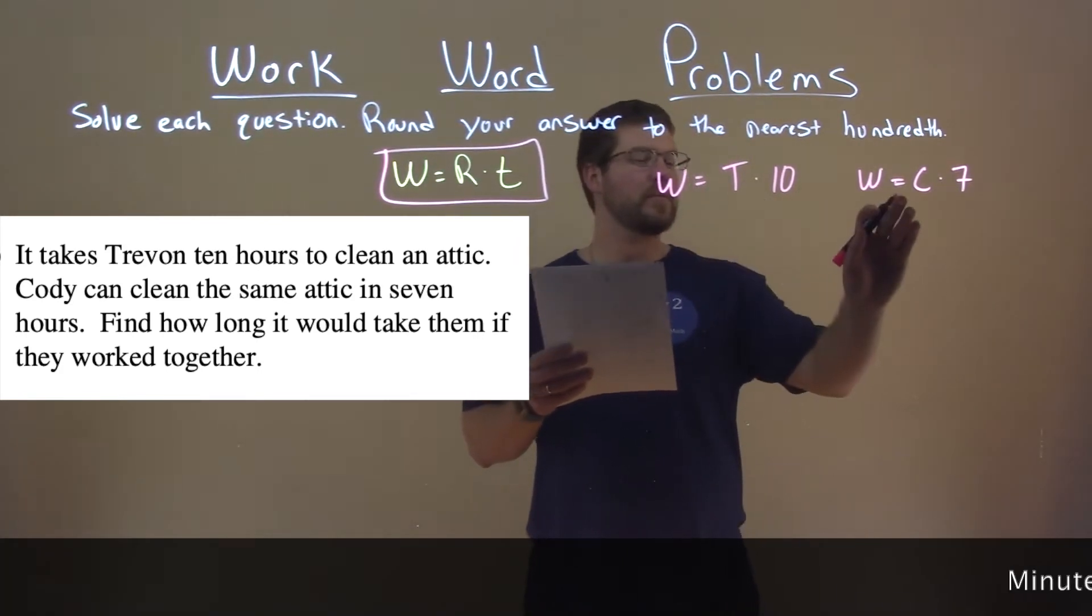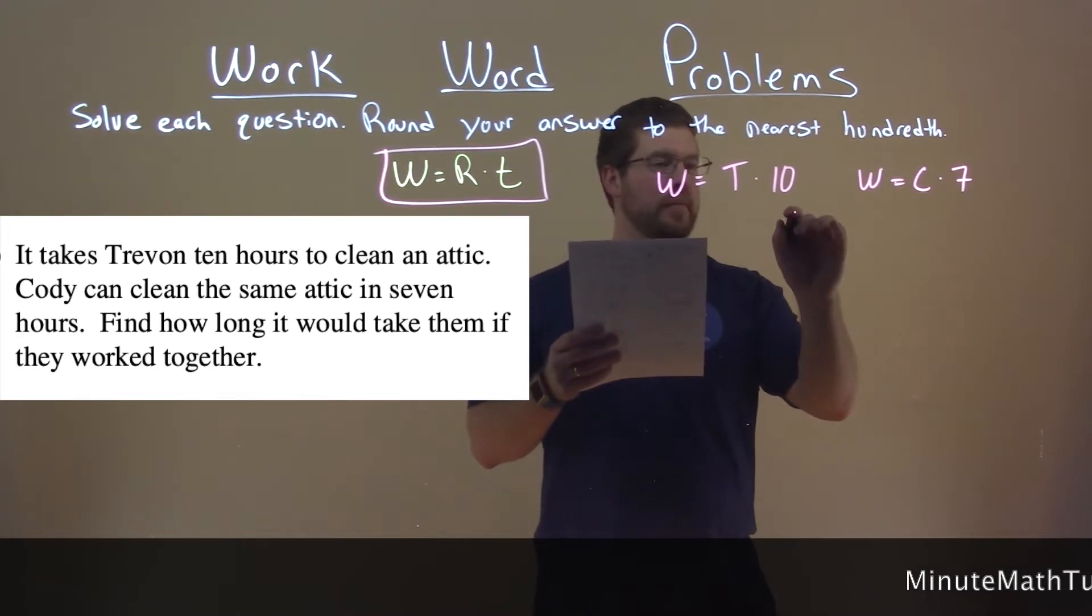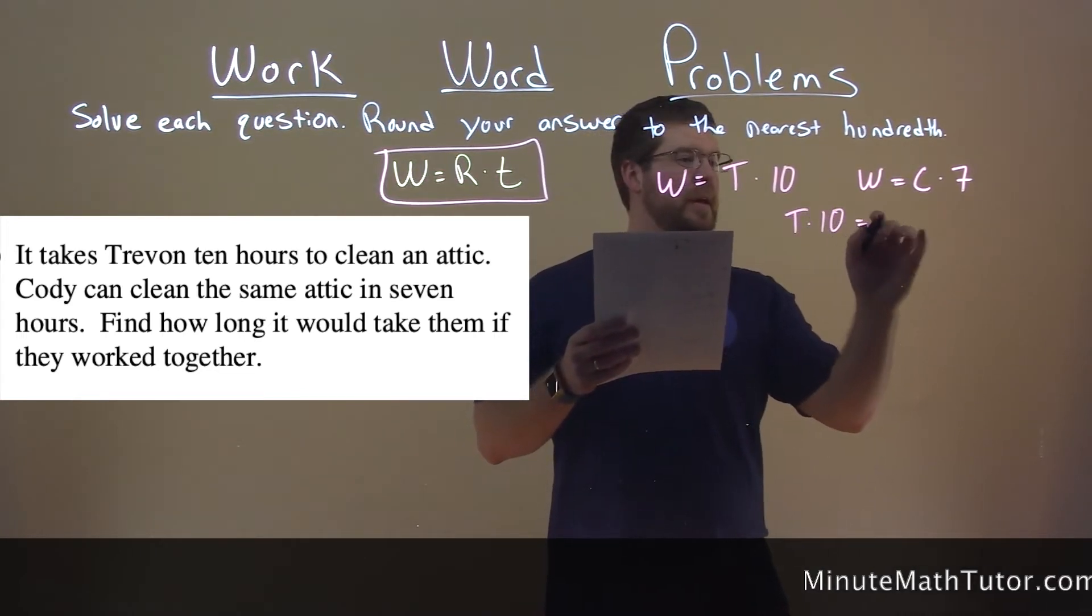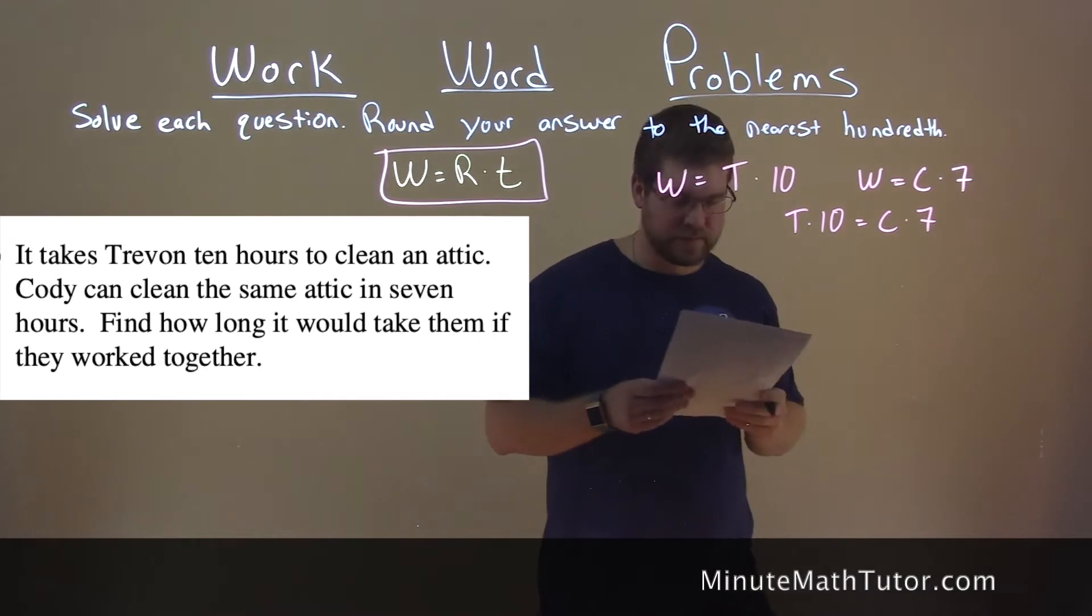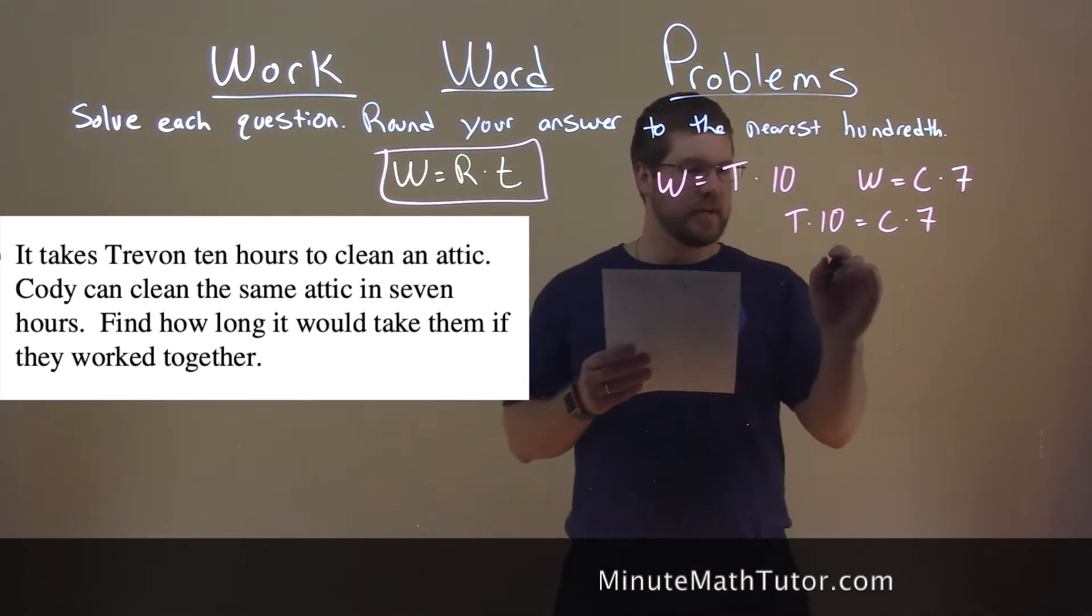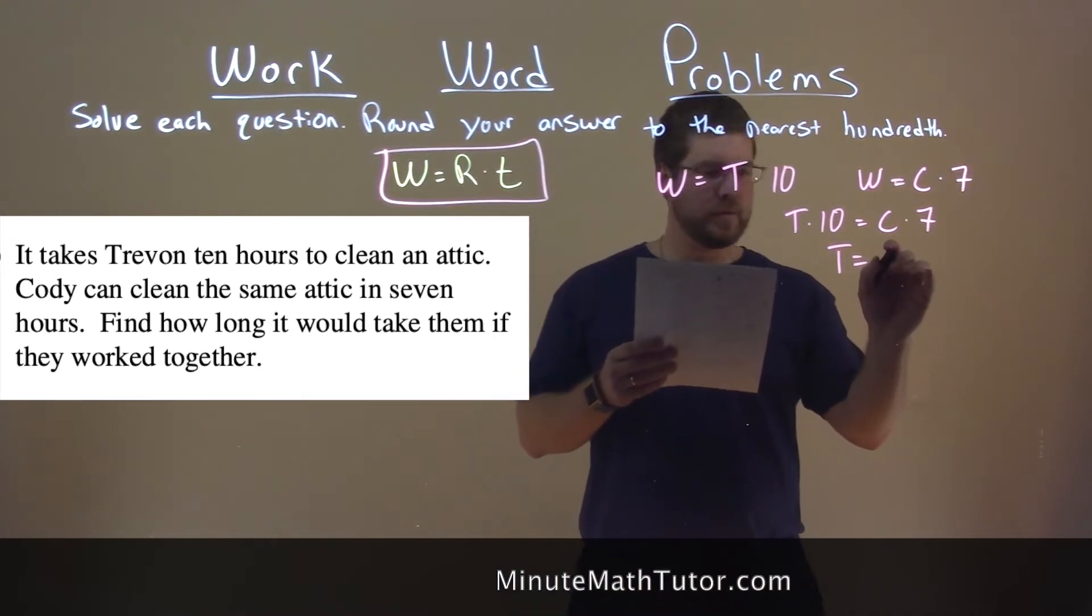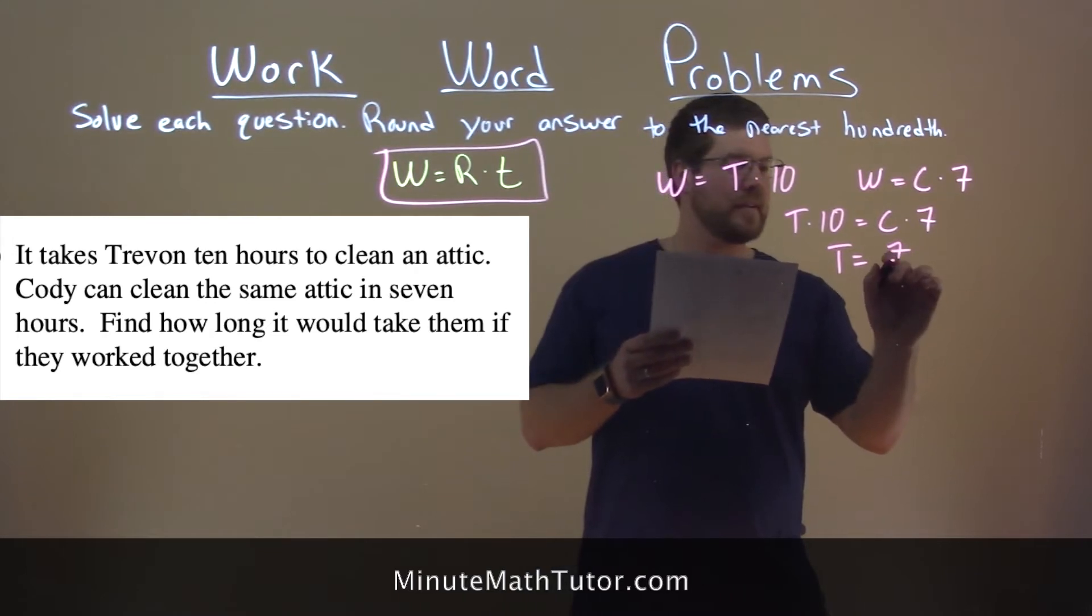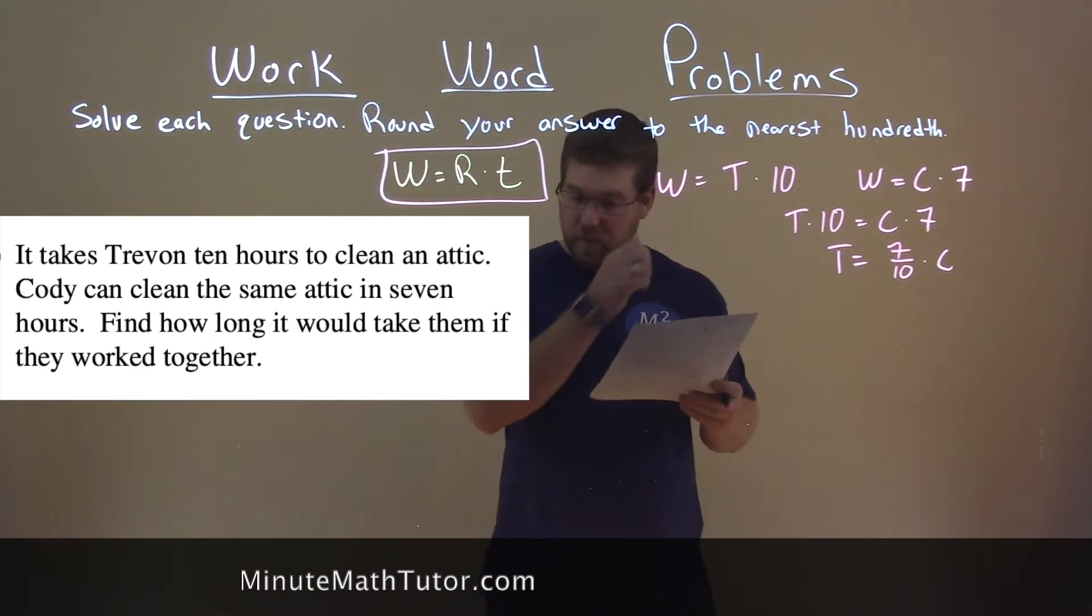So since they're both equal to W, we can set them equal to each other. T times 10 equals C times 7. Divide both sides by 10 and T equals seven tenths times C.